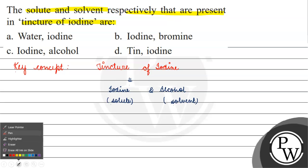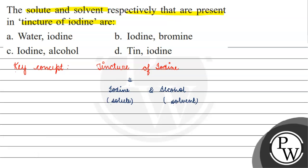The correct answer for this question will be option C, iodine and alcohol. The solute will be iodine and the solvent will be alcohol. I hope you understood it well. Thank you and all the best.